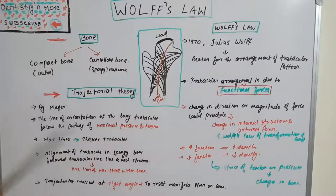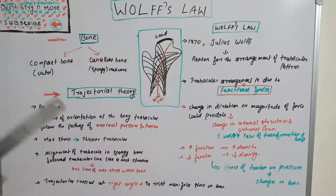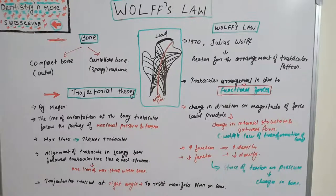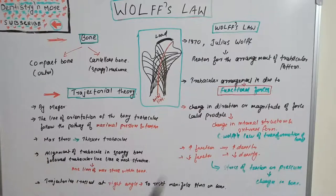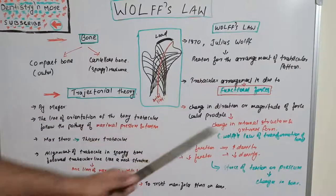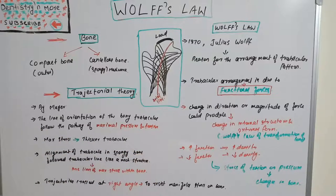Trajectorial theory does not mention functional forces, but Wolff's Law does. If there is increased function, the bone has more density, because wherever the function is high the bone produces more density to withstand the maximum load. If function is decreased or minimal, the density automatically decreases too. So stress of tension or pressure results in change in bone — it affects the internal structure and external form. That is all about Wolff's Law.